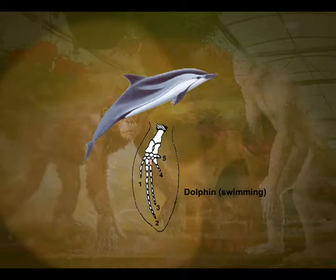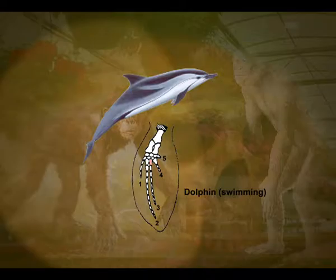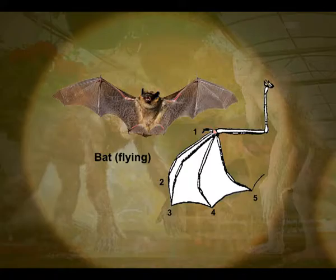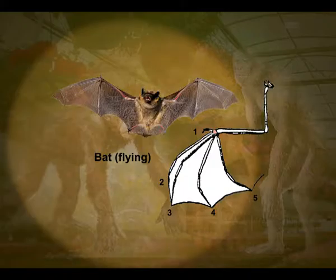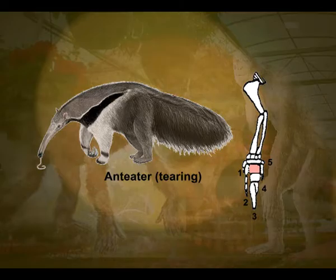All of them have humerus, radius, ulna, carpals, metacarpals and phalanges in their forelimbs. Hence, in these animals the same structure develops along different directions due to adaptation to different needs. This is divergent evolution and these structures are called homologous organs. Homology indicates common ancestry.